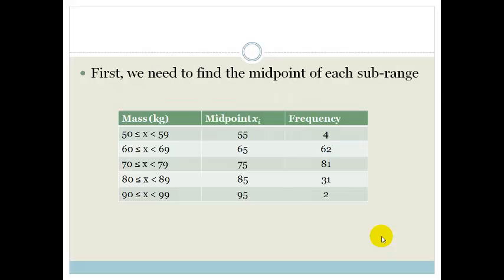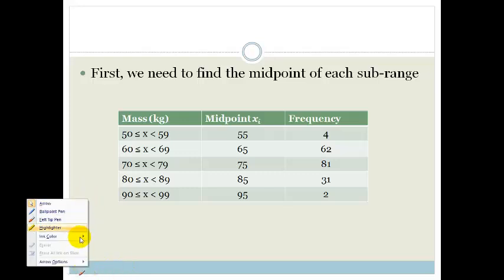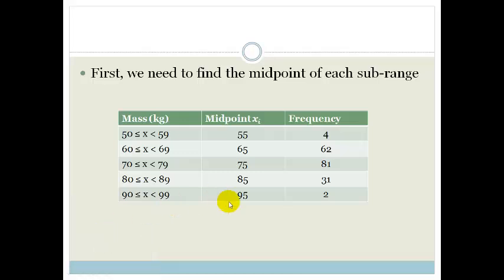First, we need to find the midpoint of each sub-range. If you look at this, you can see that halfway between 50 and 59 is going to be 55. Halfway between 60 and 69 is 65, etc. So now we have the midpoint, the average point between 50 and 59. The average point between 60 and 69 is 65, etc. So we're going to use the midpoint.